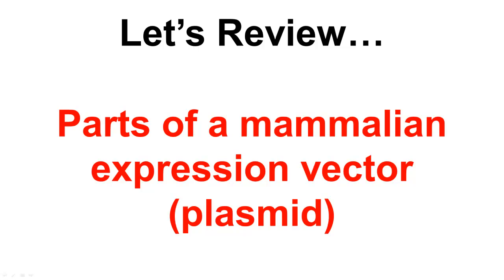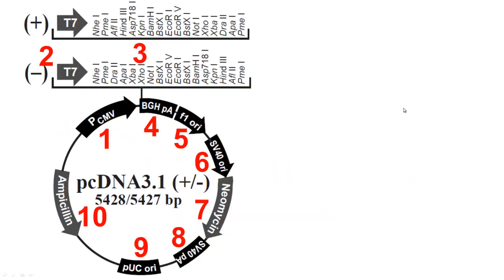There are many types of mammalian expression vectors, and there's no way I can cover every specific one. So today we're going to be using one example, shown right here: pCDNA 3.1. Many of you have probably used this vector before, or know someone who has, or used a derivative of it. This has been around for a long time and shares many of the same components as other commercial vectors. As you can see in the slide, I've labeled each part of this vector 1 through 10, and we're going to go through each section one by one.